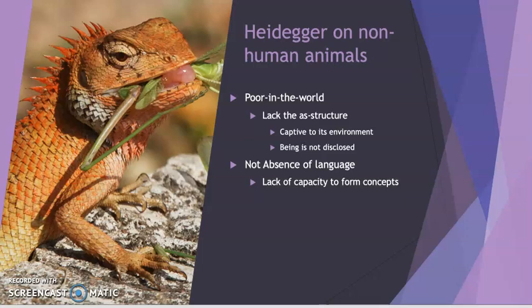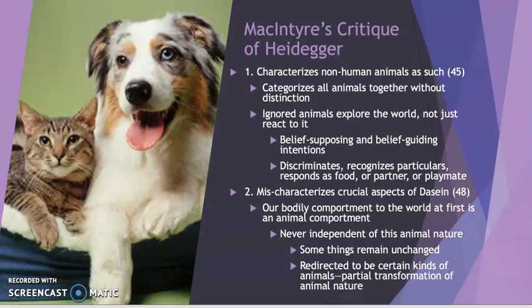It's important to recognize that Heidegger does use a variety of examples from the non-human animal world. The unfortunate thing is that most of those animals are the less capable ones — animals that are less in their capacity to engage with the world. He's not looking at dogs and cats, or dolphins. This is part of McIntyre's critique: Heidegger characterizes all non-human animals as such, saying that dogs and cats and dolphins are exactly the same as the lizard and that they do not have an as-structure to engage with the world. What Heidegger does is ignore the way that various animals explore the world, not just react to it.